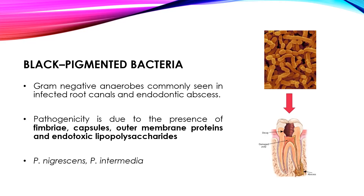Black-pigmented bacteria are gram-negative anaerobes seen in infected root canals and endodontic abscesses. Their pathogenicity is due to the presence of fimbriae, capsules, membrane proteins, and endotoxic lipopolysaccharides. Typical examples of black-pigmented bacteria which cause symptomatic infections and endodontic abscesses are Prevotella nigrescens and Prevotella intermedia.